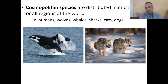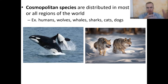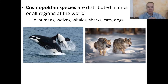For example, humans can be found on many different continents. Wolves — different types like timber wolves in colder areas and warmer weather wolves — whales, sharks, cats, and dogs can also be found in many different parts of the world. So they're cosmopolitan species.